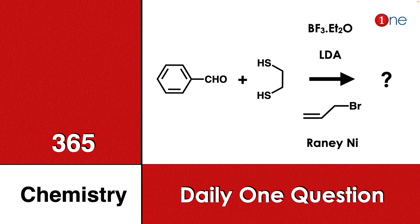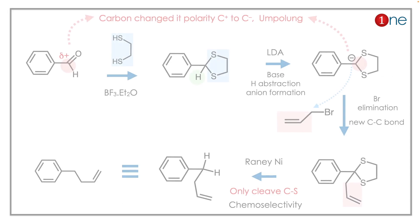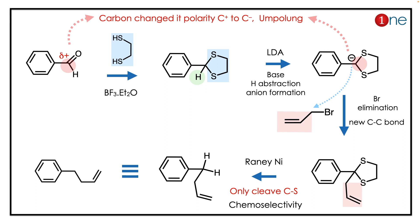The new concept here is the Umpolung concept — the conversion of nucleophilicity to electrophilicity. Initially you have a carbonyl; it is attacked by the dithiol, you form a dithiane. The dithiane makes the hydrogen more acidic, so it forms an anion. You are starting from a positive charge and ending up with a negative charge — this is called Umpolung.